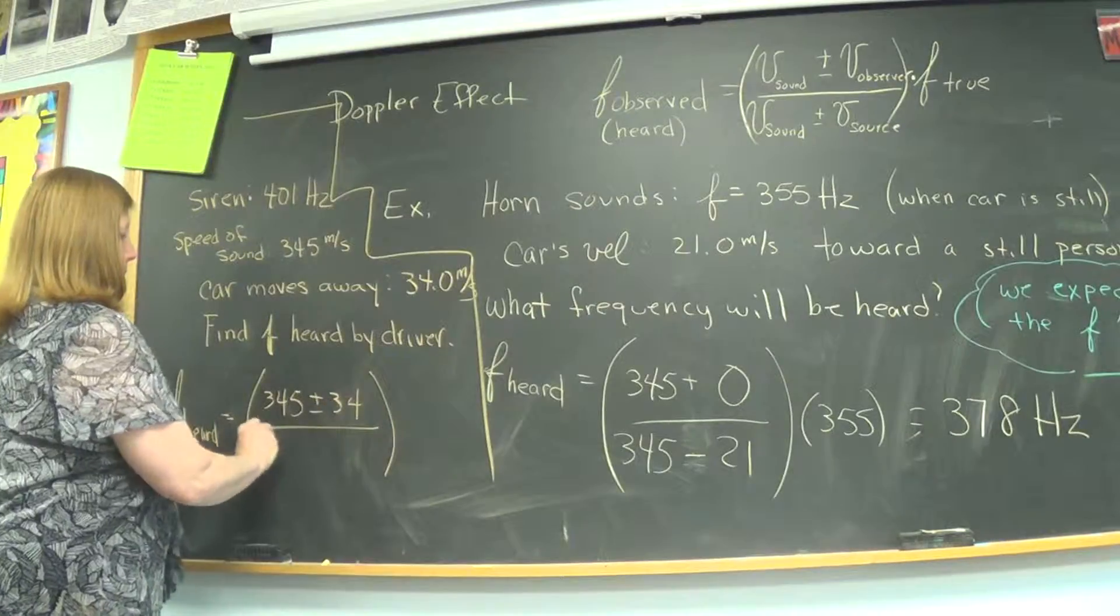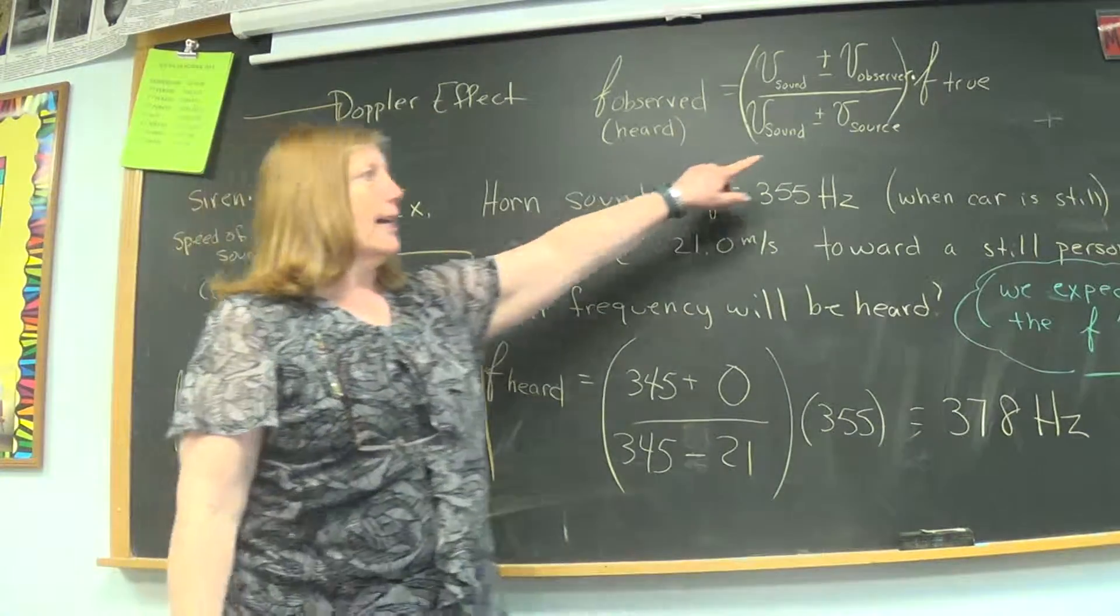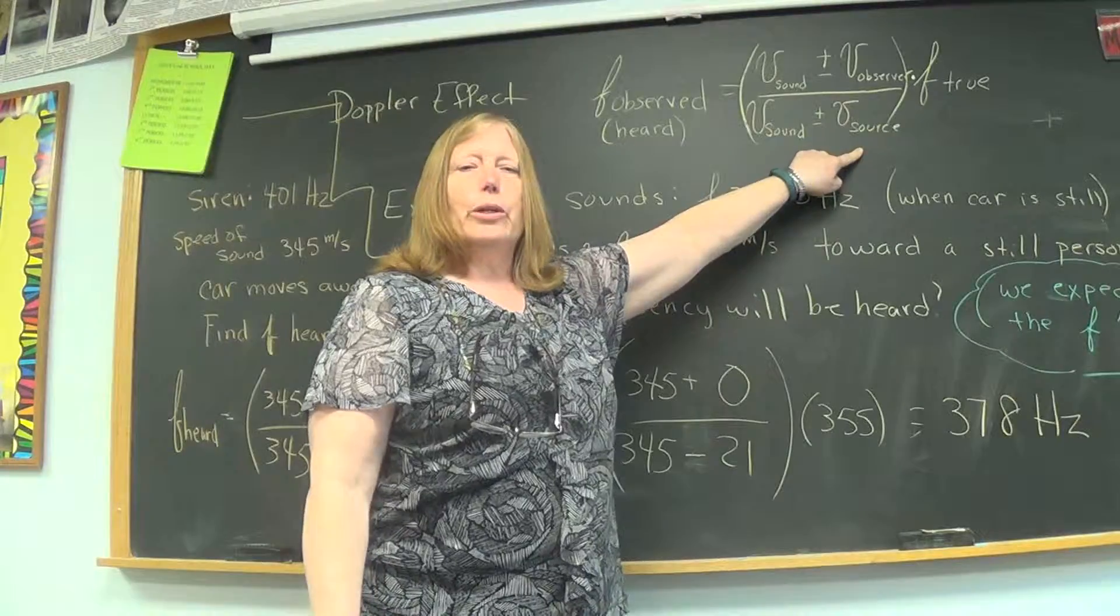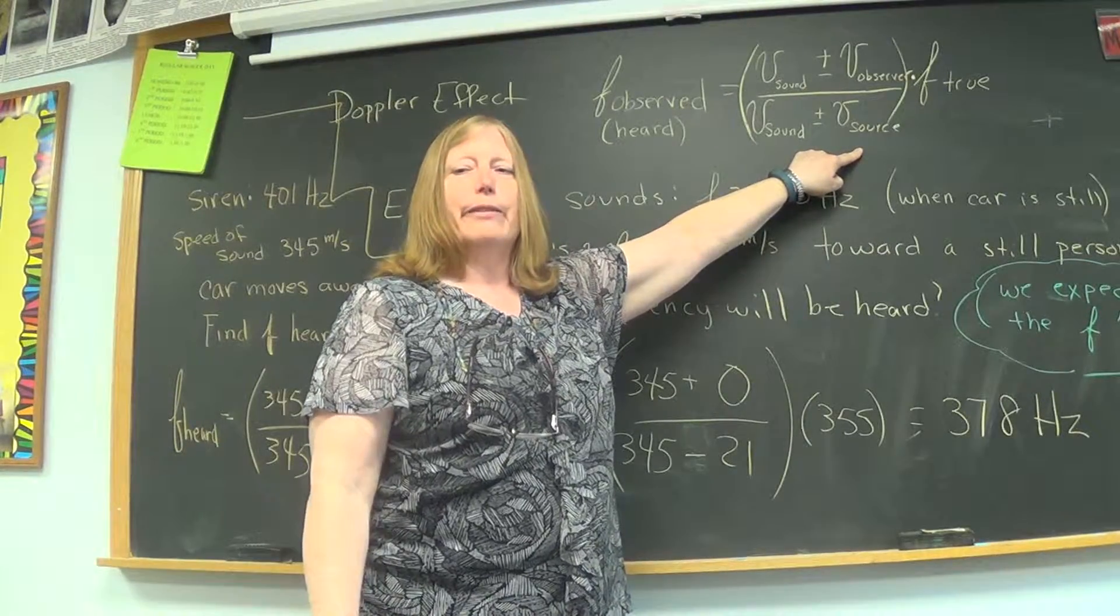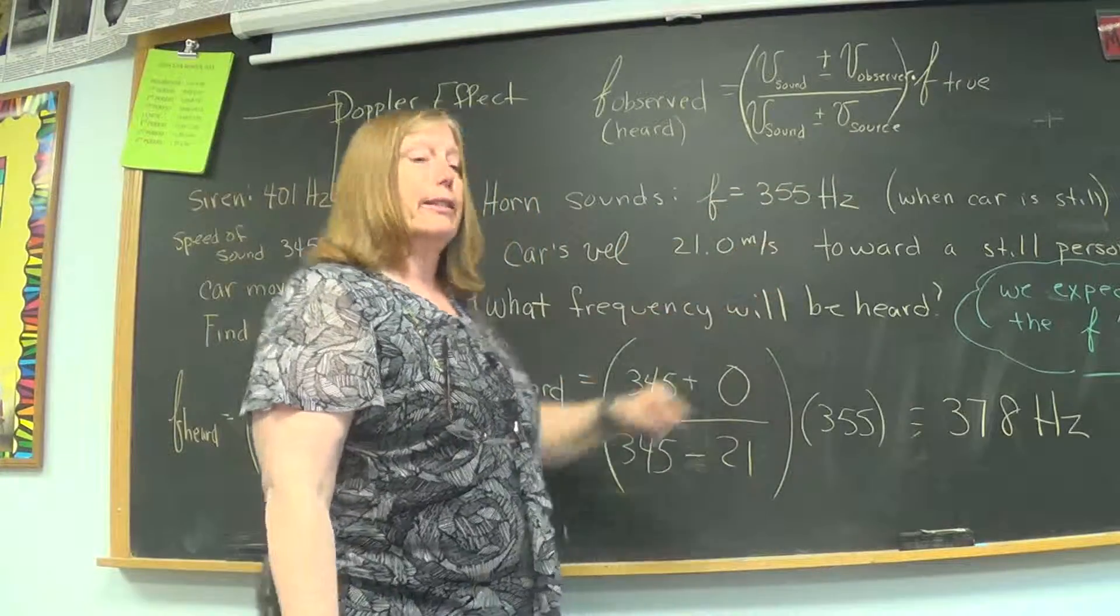On the bottom, velocity of the sound repeats, and then the velocity of the source. The source is a siren in a building, that building is not moving, so the velocity of the sound source is zero.